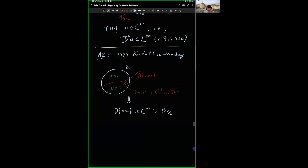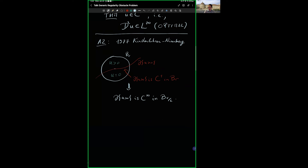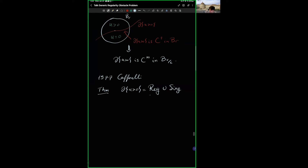However, this is a conditional theorem — it tells you only if you are in the situation of a nice surface cutting the ball in two. The question is: when does this happen? The breakthrough came at the same moment, in Caffarelli's result in 1977, where he proved that the free boundary can be written as a union of two pieces: a regular part and a singular part.